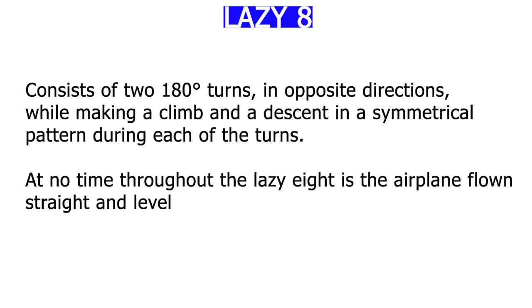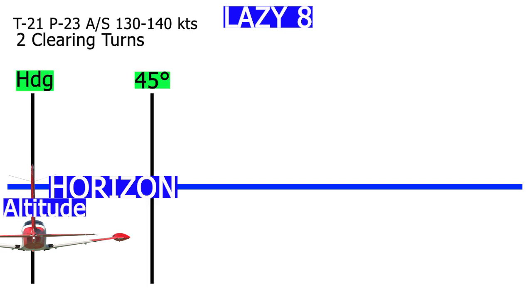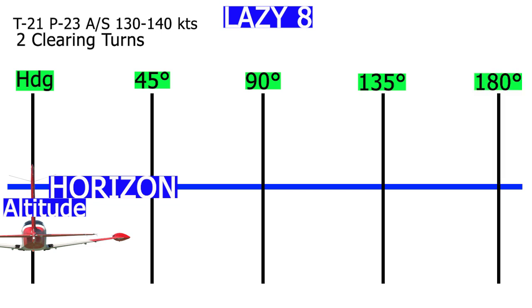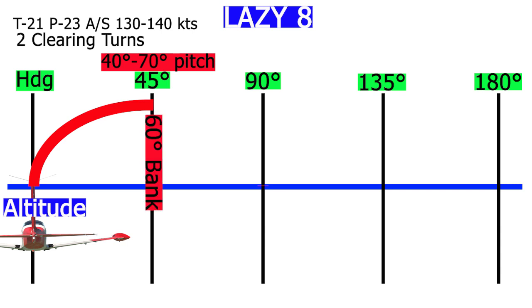Lazy 8 consists of two 180-degree turns in opposite directions, while making a climb and descent in a symmetrical pattern during each of the turns. At no time throughout the Lazy 8 is the airplane flown straight and level. Before performing Lazy 8, make two clearing turns. Declare the present altitude, heading, 45 degrees, 90 degrees, 135 degrees, and 180 degrees reference points. From a normal cruise, gradually apply back pressure and blend aileron to attain a smooth and slow rated climbing turn. Apply appropriate rudder pressure for coordinated aircraft control. At 45 degrees change of direction, pitch and bank angle should be at the maximum — approximately 40 to 70 degrees pitch up and 60 degrees angle of bank — with top airspeed of 75 knots. At this point, gradually ease back pressure and let the aircraft make a slow descending turn.